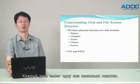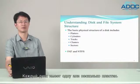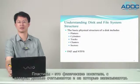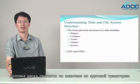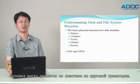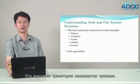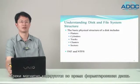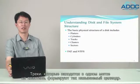Each disk has one or more platters. Platters are the physical media from which data is read and to which data is written. The disk head travels in a circular path over the platters. This circular path is called a track. Tracks are magnetically encoded when you format a disk.